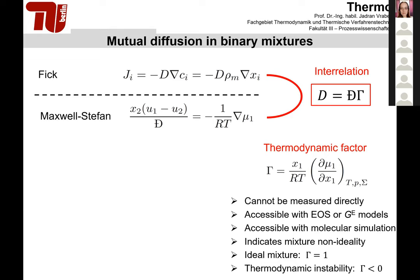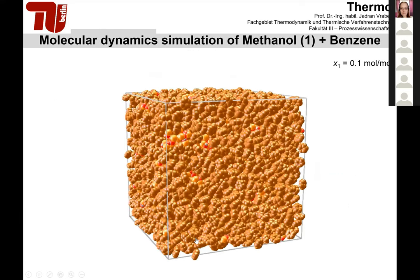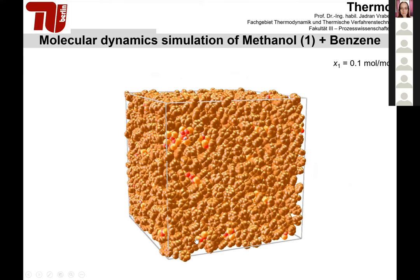The thermodynamic factor tells us about the non-ideality of a mixture. For an ideal mixture like benzene plus toluene, it will be close to unity; when it deviates strongly from unity there is pronounced non-ideality; and if it goes below zero there is thermodynamic instability, meaning for example liquid-liquid phase separation. In equilibrium molecular dynamics simulation, we have access to the Maxwell-Stefan diffusion coefficient by means of the so-called Onsager coefficients.